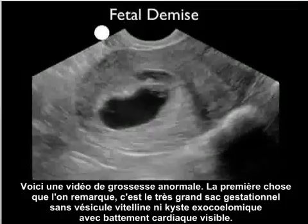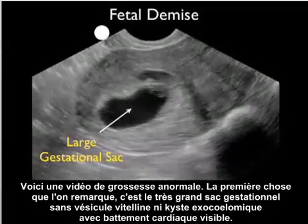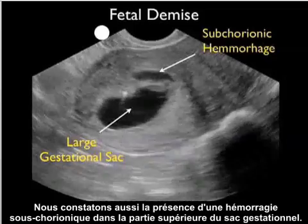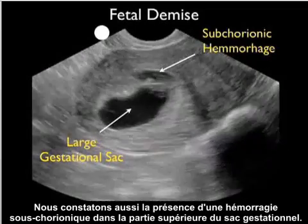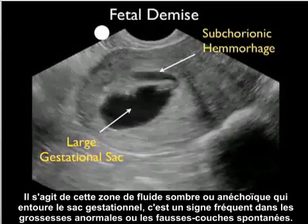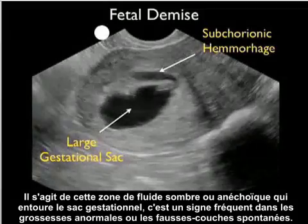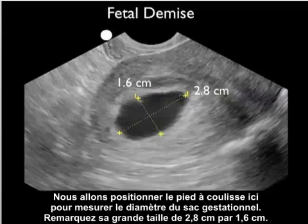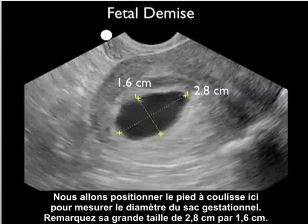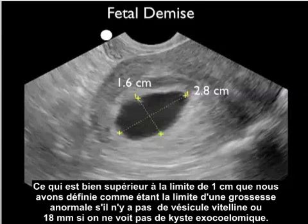Here's video from an abnormal pregnancy. The first thing we notice is a very large gestational sac without a yolk sac or discernible fetal pole with heartbeat. We also see the presence of subchorionic hemorrhage to the superior aspect of the gestational sac — that area of dark or anechoic fluid surrounding the gestational sac — which is seen commonly with abnormal pregnancies or spontaneous miscarriage. Putting the calipers down to measure the diameter of the gestational sac, note that it's very large at 2.8 centimeters by 1.6 centimeters, much larger than the 1 centimeter mark for no yolk sac or 18 millimeters if no fetal pole was seen.